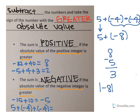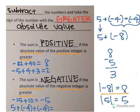Negative 8 has an absolute value of 8, and 5 has an absolute value of 5. Negative 8 has a greater absolute value and its sign is negative. So I need to have a negative sign in front of my answer. That means positive 5 plus negative 4 plus negative 4 equals negative 3.